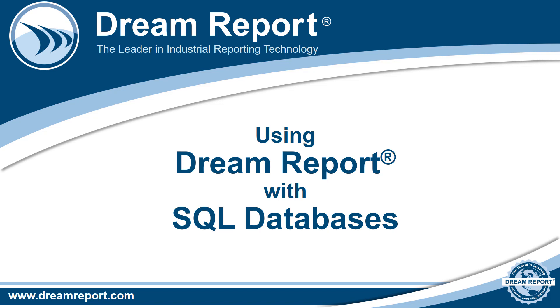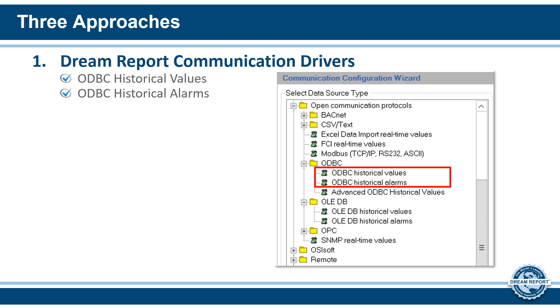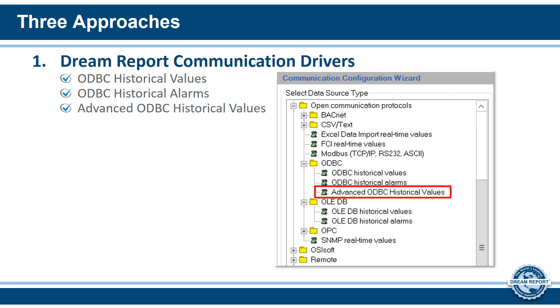There are three approaches to working with SQL databases. The first is by using the DreamReport communication drivers. There are several drivers available for database-based historical values and alarms. The basic ODBC historical values and historical alarms drivers use an ODBC connection to map into a table or view in your database. The advanced ODBC historical values driver provides the same functionality as the ODBC historical values driver but with several additional options.